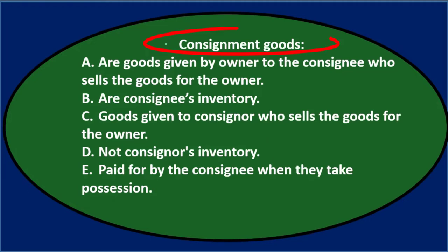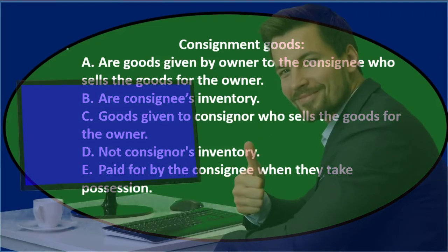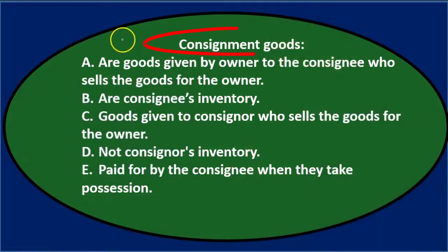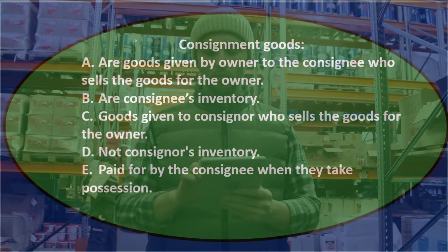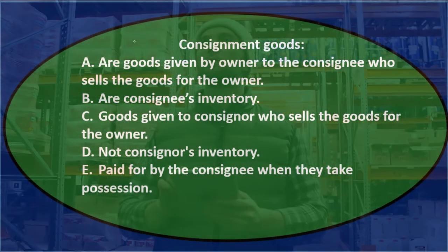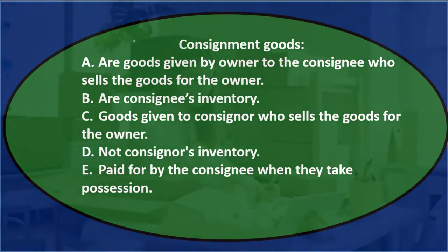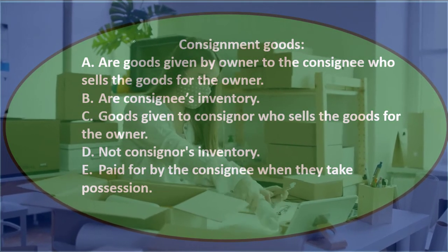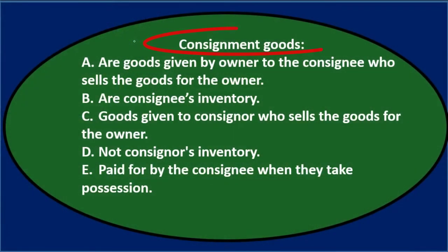The question is consignment goods. It's good if we can try to define what consignment is first. Consignment is something that will come up from time to time — it's not a major focus typically, but we need to be aware of it because it does affect how much we record in inventory. It basically means the owner of the goods is giving the goods to some other person to sell them. Although the goods have not been sold to that second individual, they're still owned by the owner.